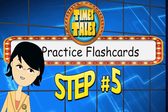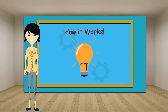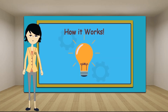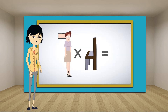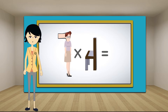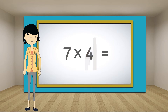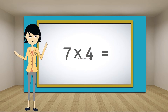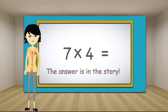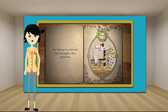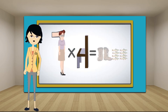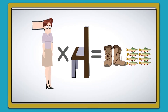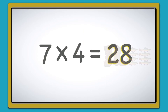Now that you know the stories, it's time to try the flashcards! Did you know there's a multiplication problem hiding in each story you just learned? Let's see how it works. This flashcard is for the multiplication problem seven times four. Mrs. Week represents the number seven and the chair the number four. The answer is hiding in the story — all you have to do is remember the times tale with Mrs. Week and the chair: she sat on a chair and fished, catching two boots and eight trout. Seven times four is twenty-eight.